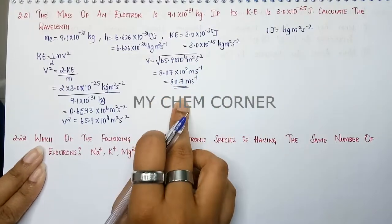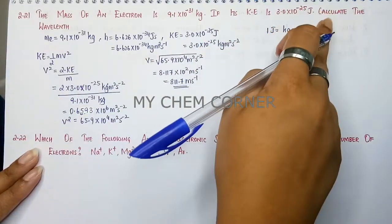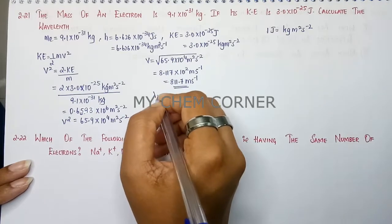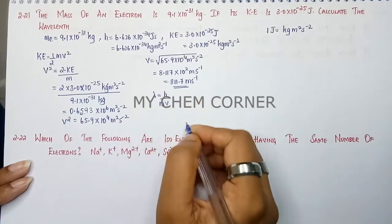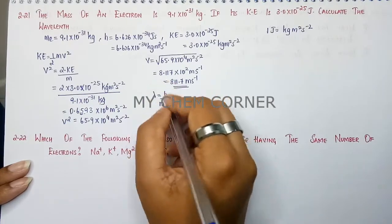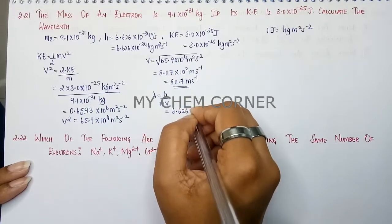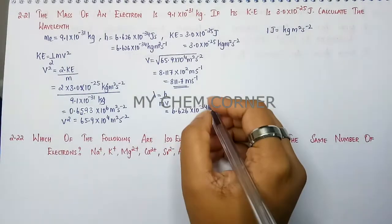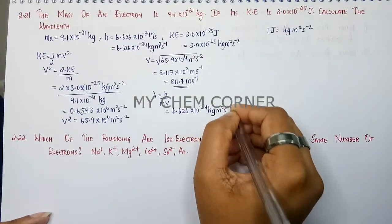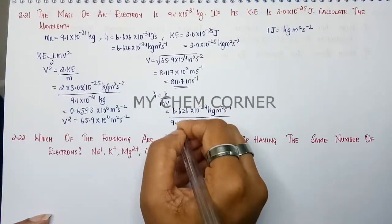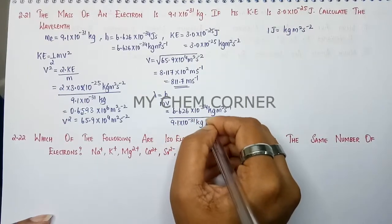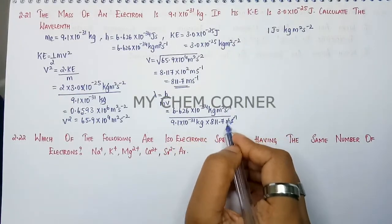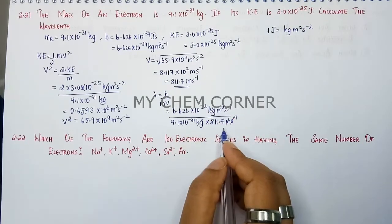We still need to find the wavelength. The relation between wavelength and velocity is De Broglie's equation: λ = h / (mv). Substituting: h = 6.626 × 10⁻³⁴ kg·m²·s⁻¹, mass = 9.1 × 10⁻³¹ kg, and velocity = 8117.7 m/s. The kg and m units cancel accordingly.